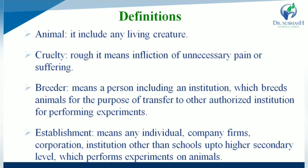What are the definitions? First definition: Animal. According to the Animal Act, an animal includes any living creature. Second definition: Cruelty. Cruelty means the infliction of unnecessary pain or suffering. So anything that inflicts unnecessary pain or suffering is called cruelty.